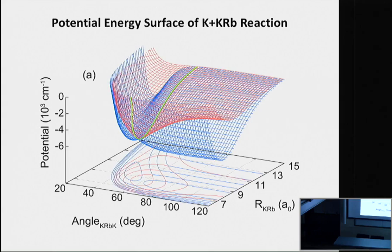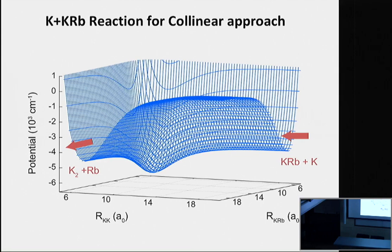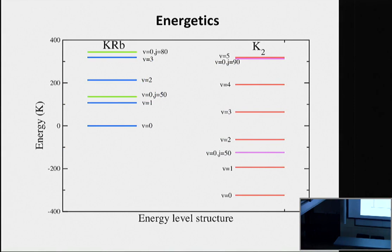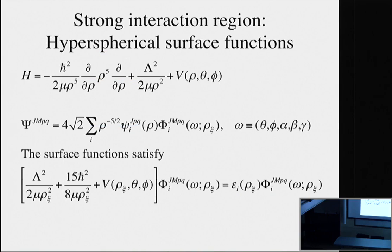As part of this collaboration, we computed a potential energy surface for the K + KRb reaction that Brian discussed yesterday. This is another view of the same ground-state potential for a collinear geometry. We looked at the K + KRb reaction and tried to see if we could, from ab initio theory, describe the experiment. The experiment just provides a decay rate — the overall decay of the KRb molecule attributed to the chemical reaction, with no product quantum states measured. Starting with KRb in V=0, J=0, after the reaction producing K2 + Rb, it can populate vibrational levels 0, 1, and 2, and many rotational levels, requiring a fairly large basis set.